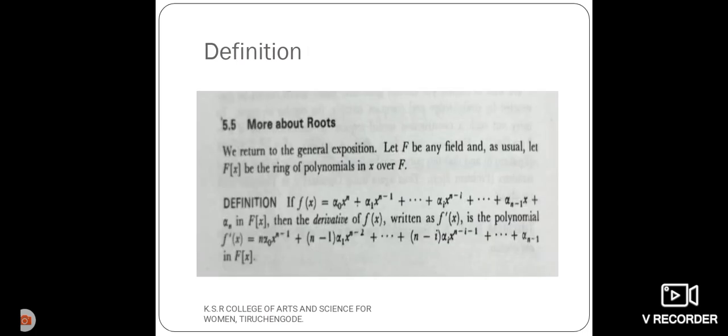More about roots. Here, F is the field and F of X is the ring of polynomials in X over F. Let's take a polynomial, namely F of X, which is equal to alpha naught X power N plus alpha 1 X power N minus 1 plus etc.